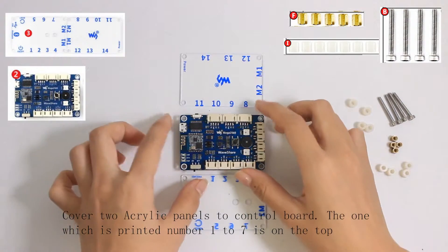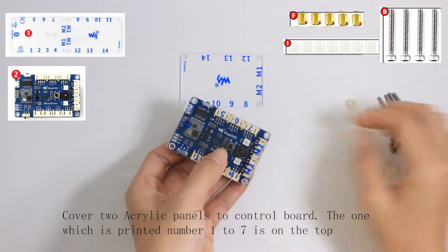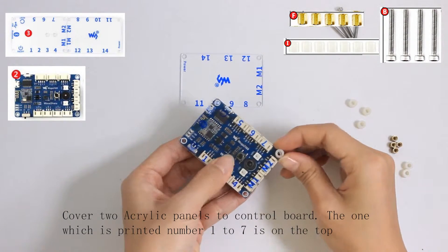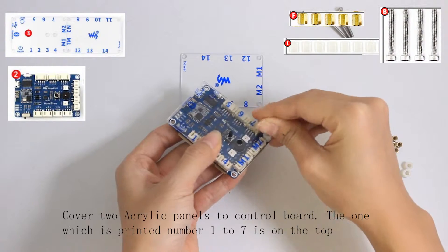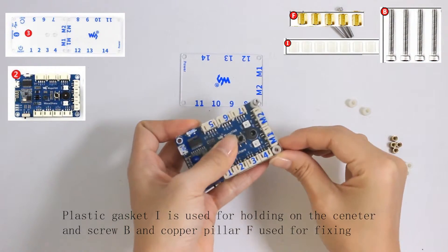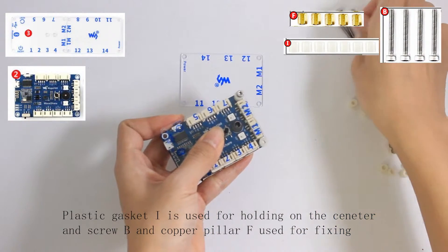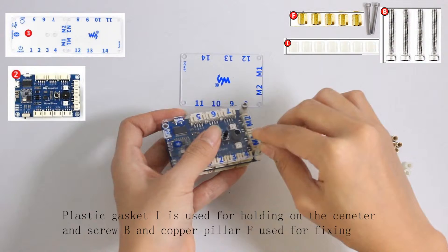Cover two acrylic panels to control board. The one which has numbers 1 to 7 printed is on the top. Plastic gasket I is used for holding on the center. Screw B and copper pillars F are used for fixing.